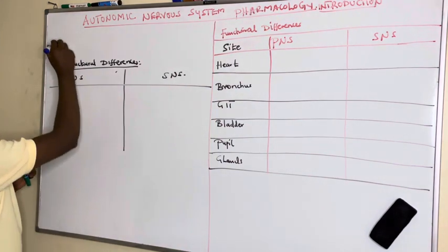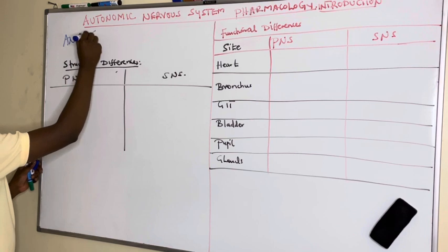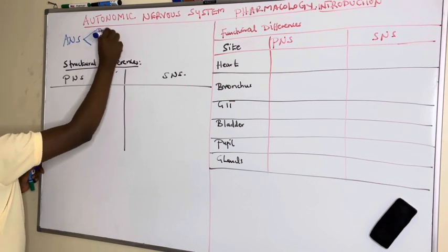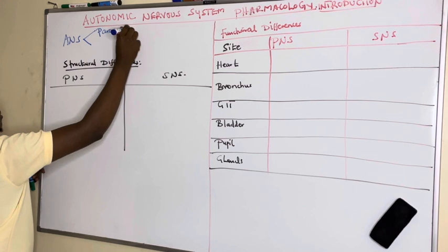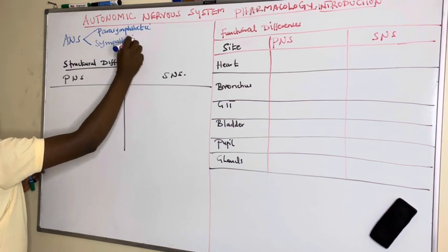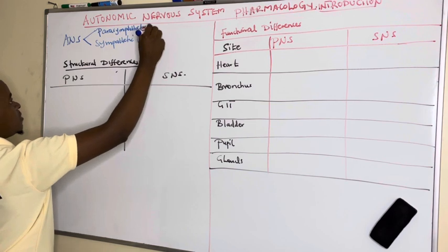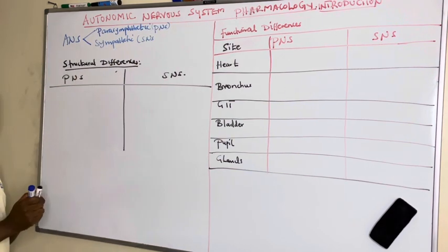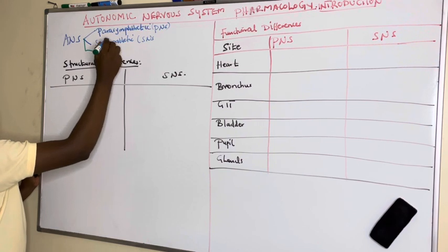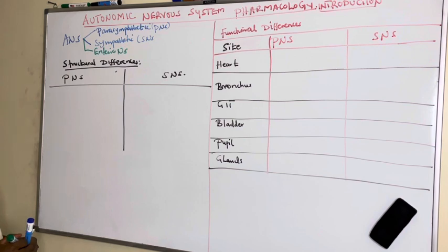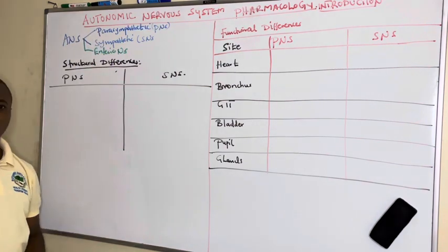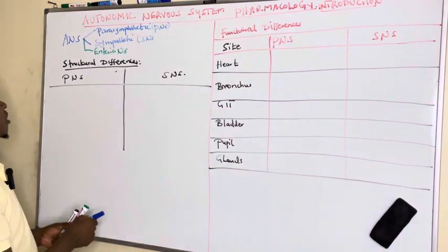The Autonomic Nervous System, abbreviated as ANS, is divided into two main branches: the Parasympathetic Nervous System (PNS) and the Sympathetic Nervous System (SNS). Some books also include the Enteric Nervous System as part of the ANS. In our discussion, we are going to focus on the first two — Sympathetic and Parasympathetic.